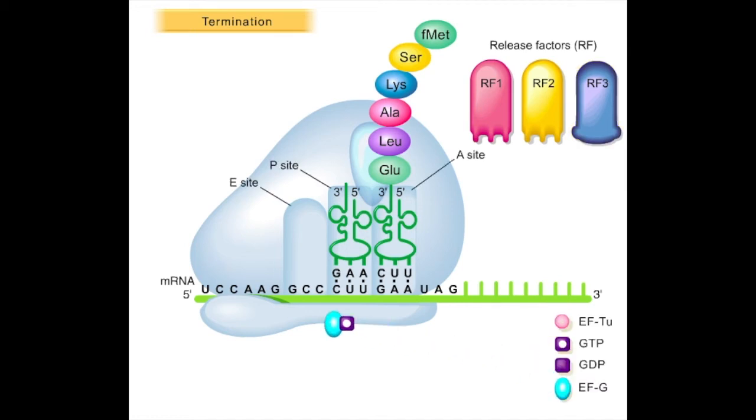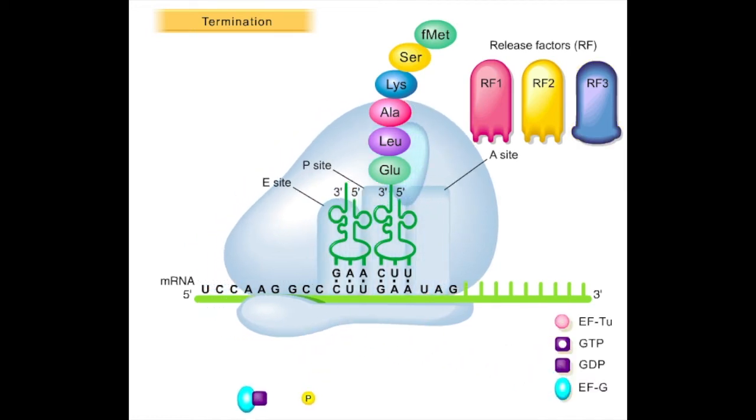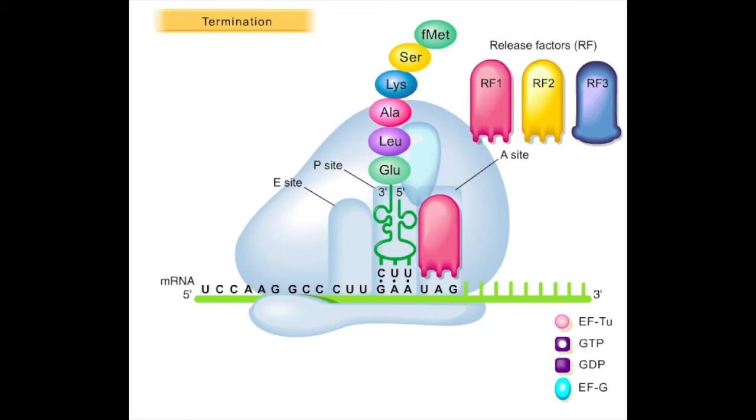Elongation and ribosome translocation result in a stop codon entering the vacant A site. RF1 or RF2 binds to the stop codon, which triggers peptidyl transferase to cleave the now-complete polypeptide from its tRNA located in the P site of the ribosome.